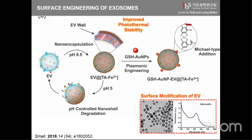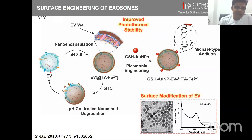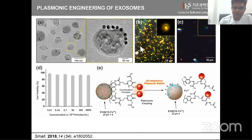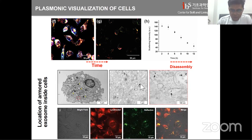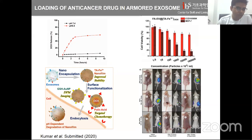Exosomes are a good alternative to liposomes and nanoparticles for therapy because they're natural, have very good survival rate in blood, and have passive targeting capability. We can tune the pH to remove the tannic acid layer and functionalize nanoparticles on the surface. We showed glutathione nanoparticle modification and could observe them under dark-field microscopy, with cellular uptake releasing the nanoparticles from the exosomes. This is ongoing in vivo work.